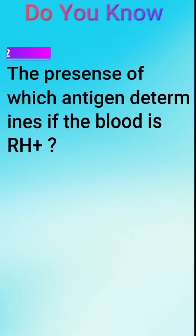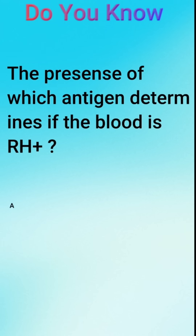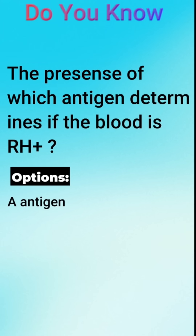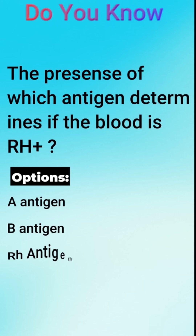The presence of which antigen determines if the blood is Rh-positive? The options are: A antigen, B antigen, Rh antigen, or no antigen.